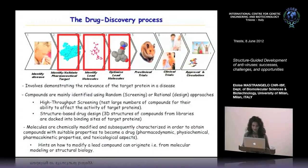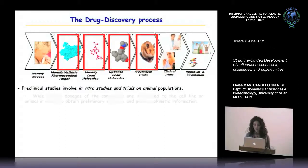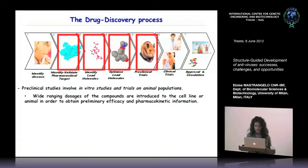Once we have the lead molecules, we can modify them to obtain compounds with suitable pharmacodynamic, pharmacokinetic, and toxicological properties to become drugs. Hints on how to modify lead compounds can originate from molecular modeling and structural biology information. Then we can start preclinical trials involving in vitro studies and animal trials to obtain preliminary efficacy and pharmacokinetic information.